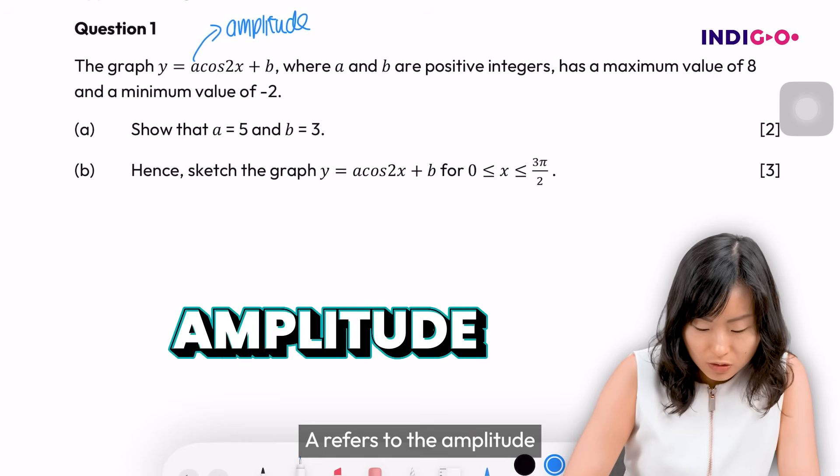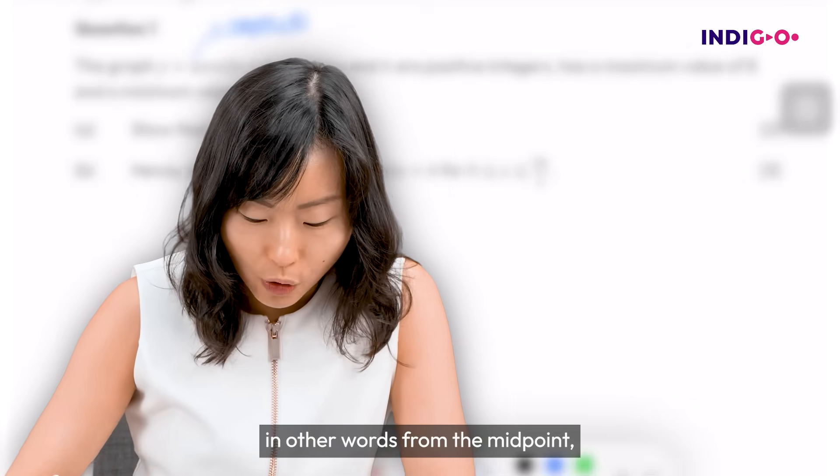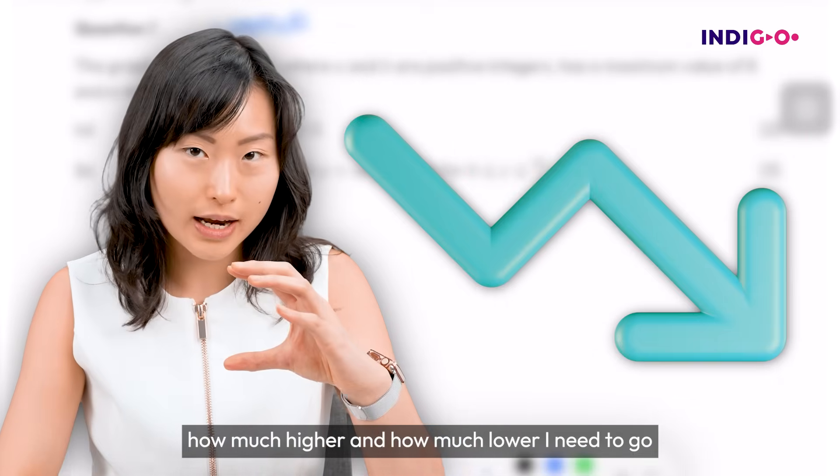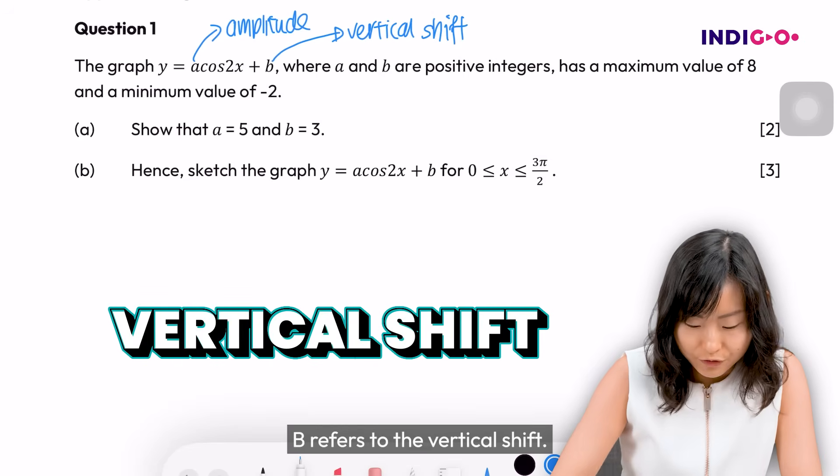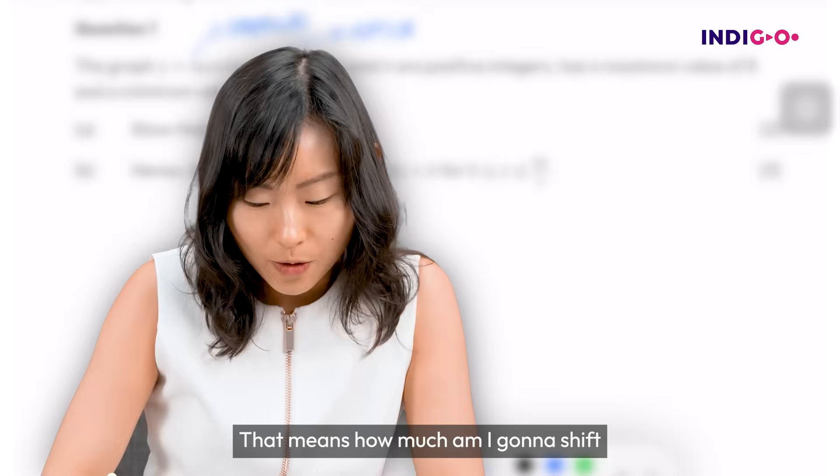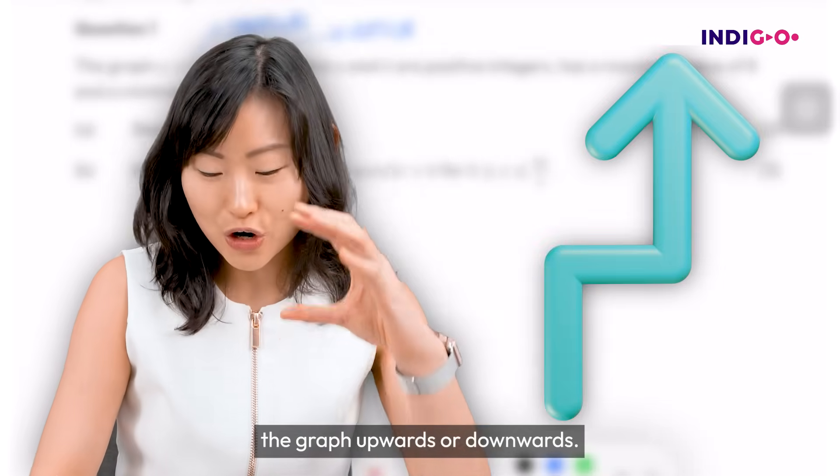A refers to the amplitude. In other words, from the midpoint, how much higher and how much lower I need to go. So that number of units is a. B refers to the vertical shift. That means how much am I going to shift the graph upwards or downwards?